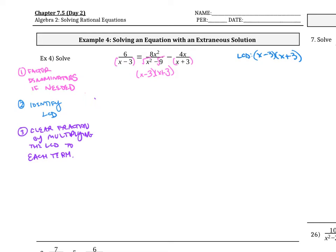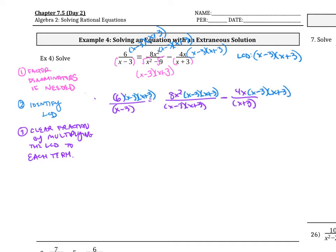The next step is to clear the fraction by multiplying the LCD to each term. The LCD is x minus 3 times x plus 3, and I'm going to multiply it to every single term. It is over 1 because our goal when we do this is to clear the fraction. We have 6 times x minus 3 plus x plus 3 over x minus 3, then 8x squared times the LCD x minus 3 times x plus 3, then minus 4x times that LCD over x plus 3. Now we can cancel out or divide out our common terms.